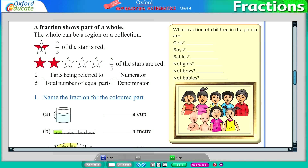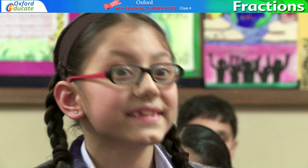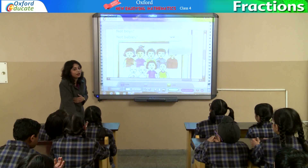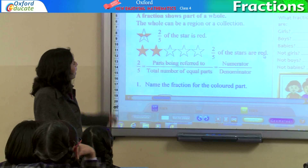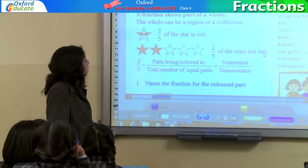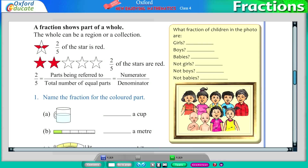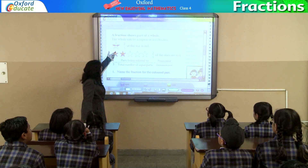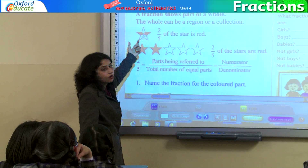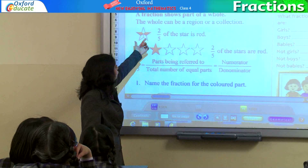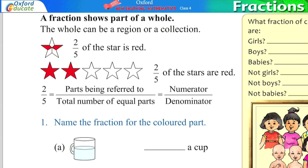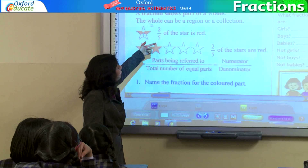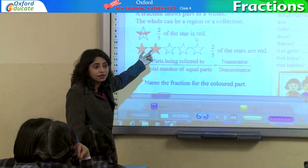What fraction of the children in the photo are not babies? 7 by 9. Right. Now, a fraction shows part of a whole. The whole can be a region or a collection. If you look at this particular star, it's a particular region. And out of this region, how much part is shaded? 2. And how many in all? 5. So, 2 by 5 of the star is red.